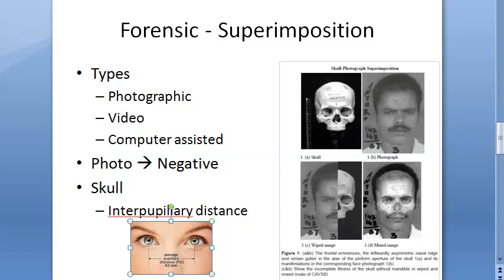During superimposition, specific anatomical markings are used: supra-orbital margin, eyebrow, external auditory meatus, orbit of eye, nasal apertures, dentition, and lips. You try to superimpose all these landmarks as accurately as possible.